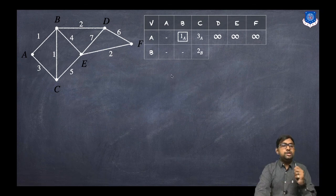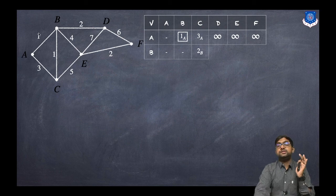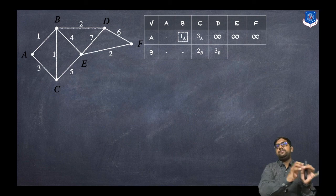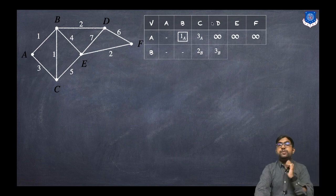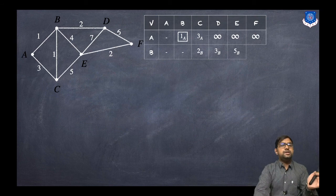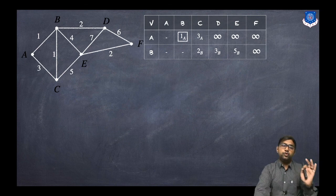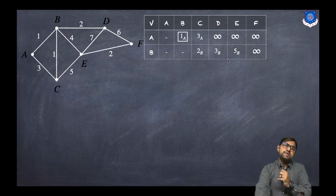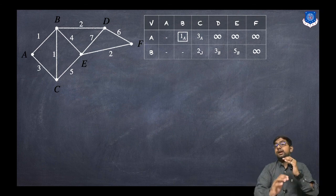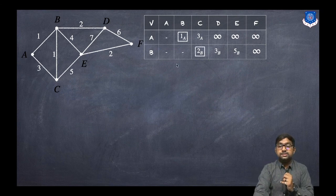Then B to D: the edge weight is 2, and the source vertex distance is 1, so 1 plus 2 equals 3, traveling via B — so 3B. Now B to E: the edge weight is 4, plus 1, so that means 5 via B — we write 5B. And B to F: there is no direct edge, so we write infinite.